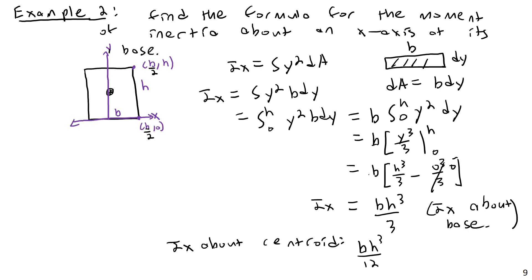For example, in beam bending you want to take the moment of inertia about the centroid. But for something like a door, you'd take it about the axis of rotation — the hinge. If you took it at a point far away, the value would become even larger. Notice that BH³/3 is exactly four times BH³/12, so the moment of inertia at the base is four times larger than at the centroid — a clear illustration of the effects of position on moment of inertia.